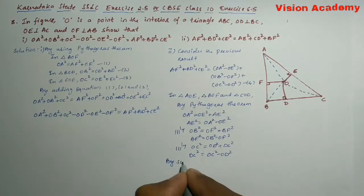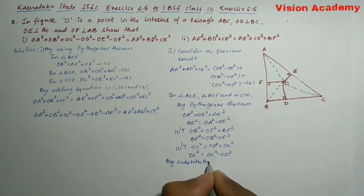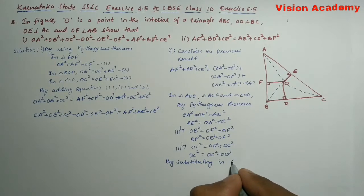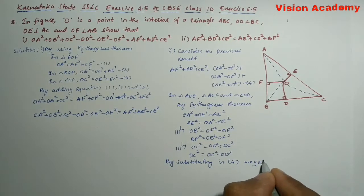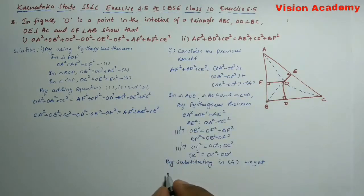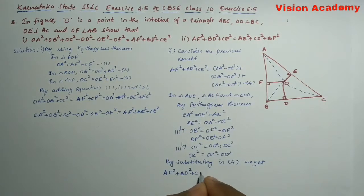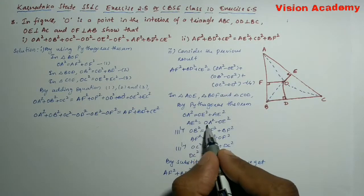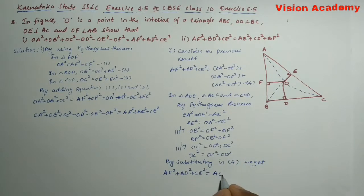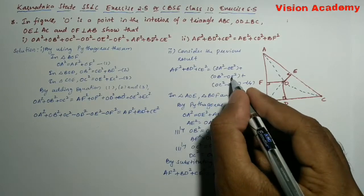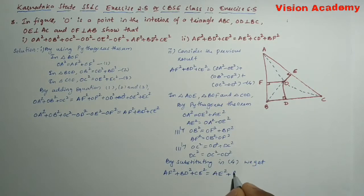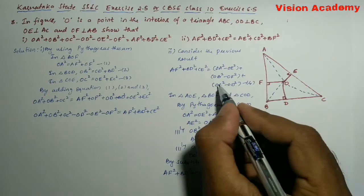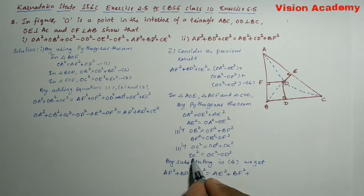By substituting into equation 4, we get: AF² + BD² + CE² = (OA² − OE²) + (OB² − OF²) + (OC² − OD²) = AE² + BF² + DC². Hence the proof.